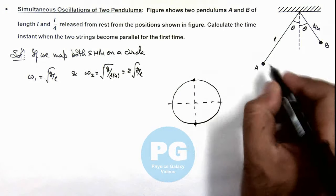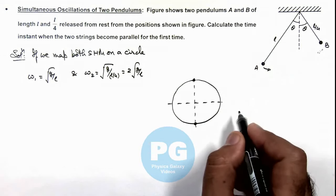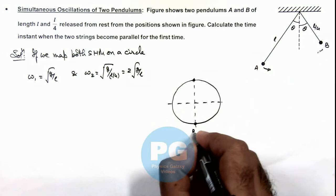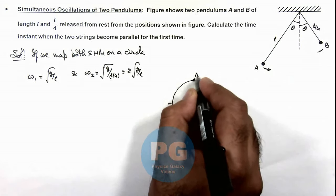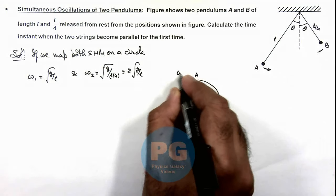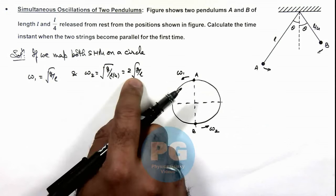So when A is moving in this direction, B is moving in this direction. We can see B starts moving with an angular speed omega_2 and on circle A starts moving with angular speed omega_1. Here we can see B is moving at twice the angular speed.